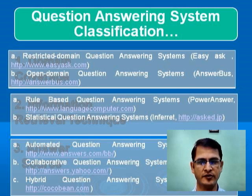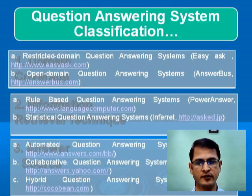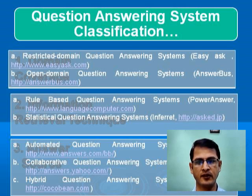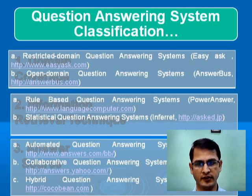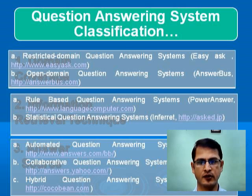Now, different types of question answering systems. We can classify question answering systems according to various criteria. For example, what type of domains they are covering. According to that, there are two types: restricted domain question answering systems and open domain question answering systems. Restricted domain systems answer questions posed in a selected domain, for example medicine or education. Open domain question answering systems usually answer questions from multiple domains.